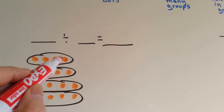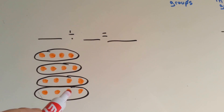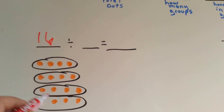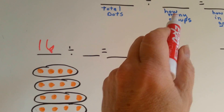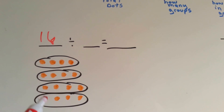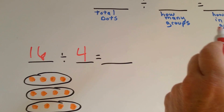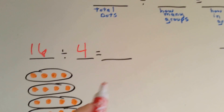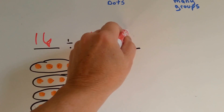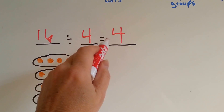1, 2, 3, 4, 5, 6, 7, 8, 9, 10, 11, 12, 13, 14, 15, 16. How many groups? 1, 2, 3, 4. How many are in each group? 1, 2, 3, 4. 16 divided by 4 equals 4.